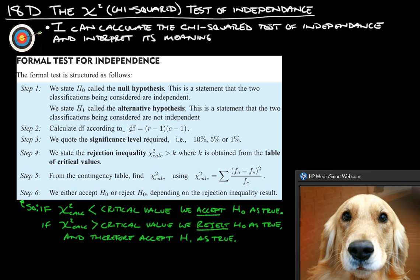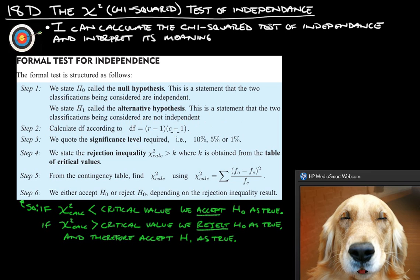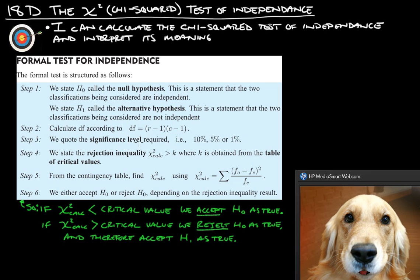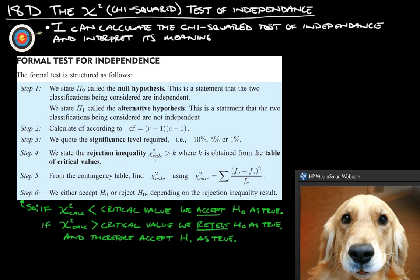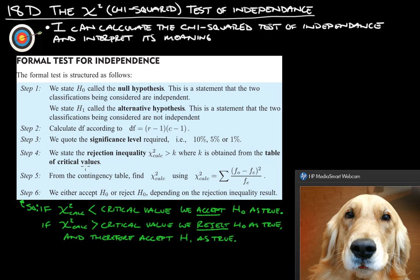Second thing we need to do is calculate our DF, which is degrees of freedom. So that's the rows minus one times the columns minus one, which we did in the last video. We quote the significance level required. And again, they will ask for one of these three significance levels. We state the rejection inequality, which is x squared, that's the chi-squared calculated, greater than k, where k is obtained from the table of critical values.